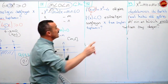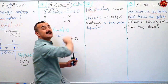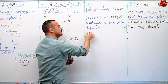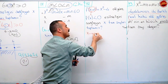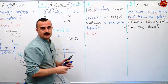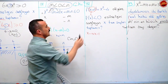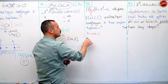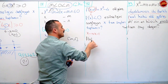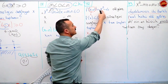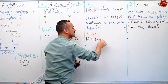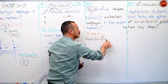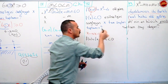Bu tarz sorularda içerideki yazanın tersini x yerlerine yazıyorduk. Bunun tersi x eksi bir. x gördüğüm yerlere x eksi bir yazıyorum. Şimdi fx'i bulacağım. x yerine x eksi bir yazınca burası fx oldu. x eksi birin karesi eksi dört. Bunun sıfırdan küçük olmasını istiyor.